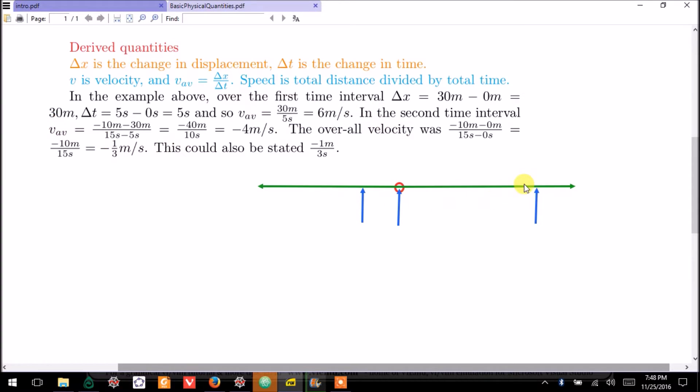Over the second time interval, it was finally displaced negative 10 meters. It was initially displaced 30 meters, and that gives us delta x equal to negative 10 minus 30 is negative 40, telling you that it moved 40 units to the left. The delta t value, 15 minus 5 seconds is 10 seconds, and we have an average velocity of negative 4 meters per second.